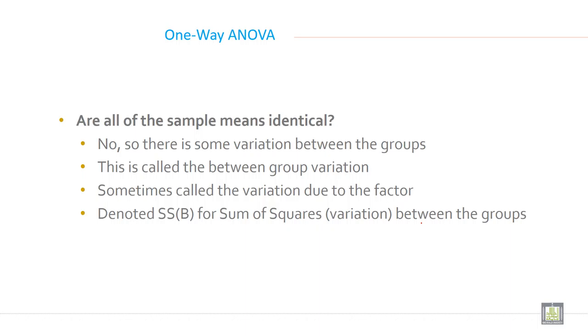Are all of the sample means identical? No, so there is some variation between the groups average. This is called between group variation, sometimes called the variation due to factors, and denoted SSB for sum of square variation between the groups.